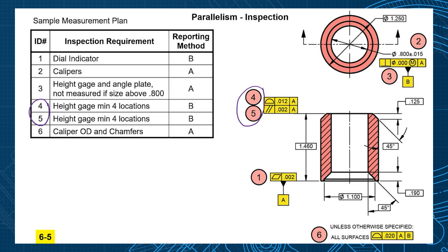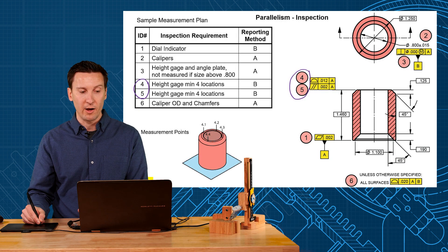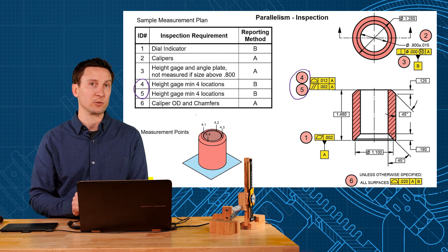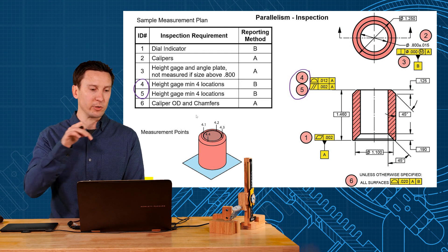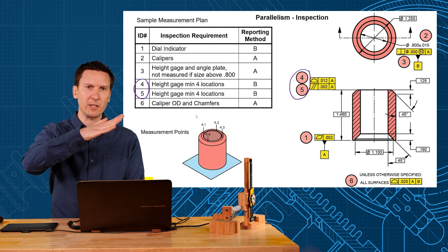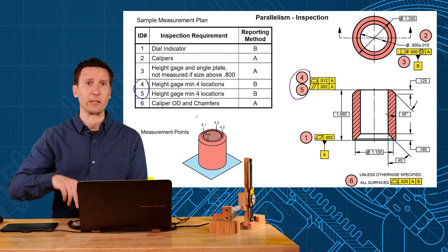And there they decided to use a height gauge with a minimum of 4 locations. Now I can even tell you where those 4 locations would be taken. Let's do 90 degrees apart across that surface. If I measure those 4 points, I think we can get a good idea of what that surface actually looks like.